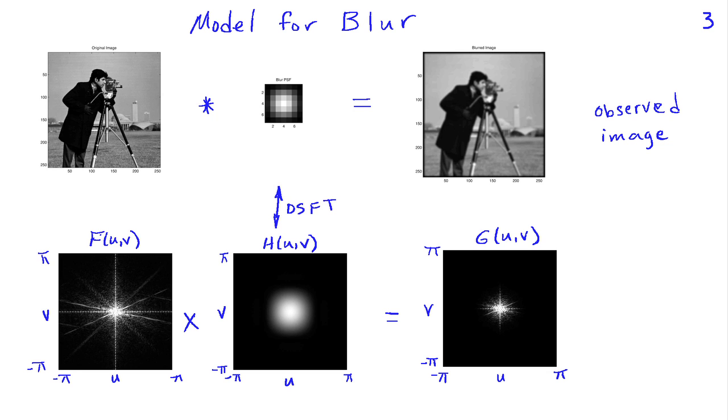Here's an example. In this panel we're looking at the model for the blur. We suppose we have our original image here on the left. We convolve that with some blur point spread function, and that will give us this blurry image that we observe on the right. Our goal is to observe this image, use our knowledge of the blur to recover the original.